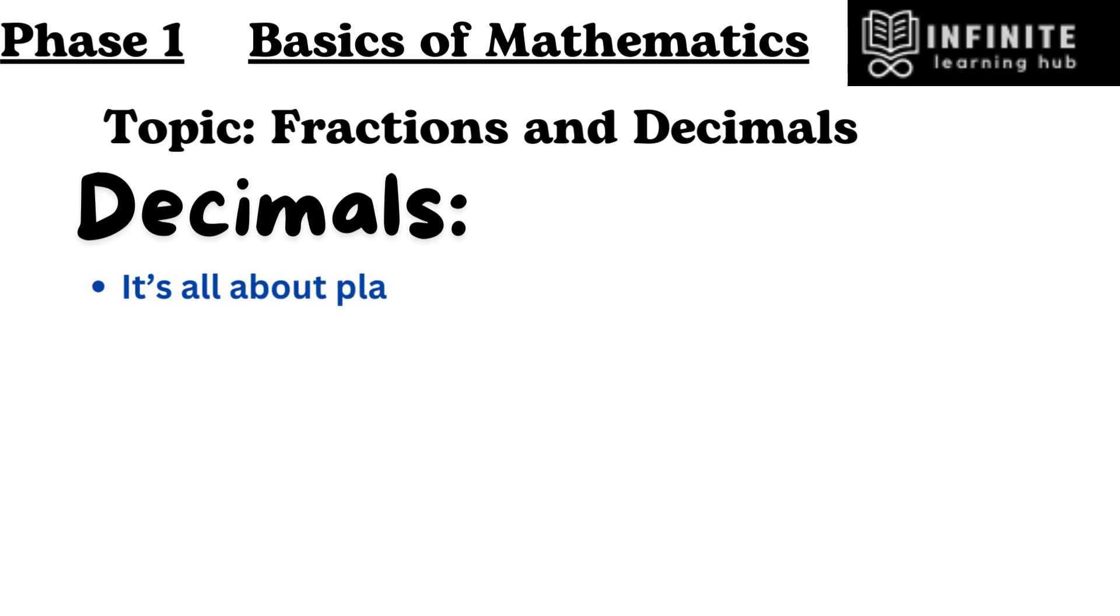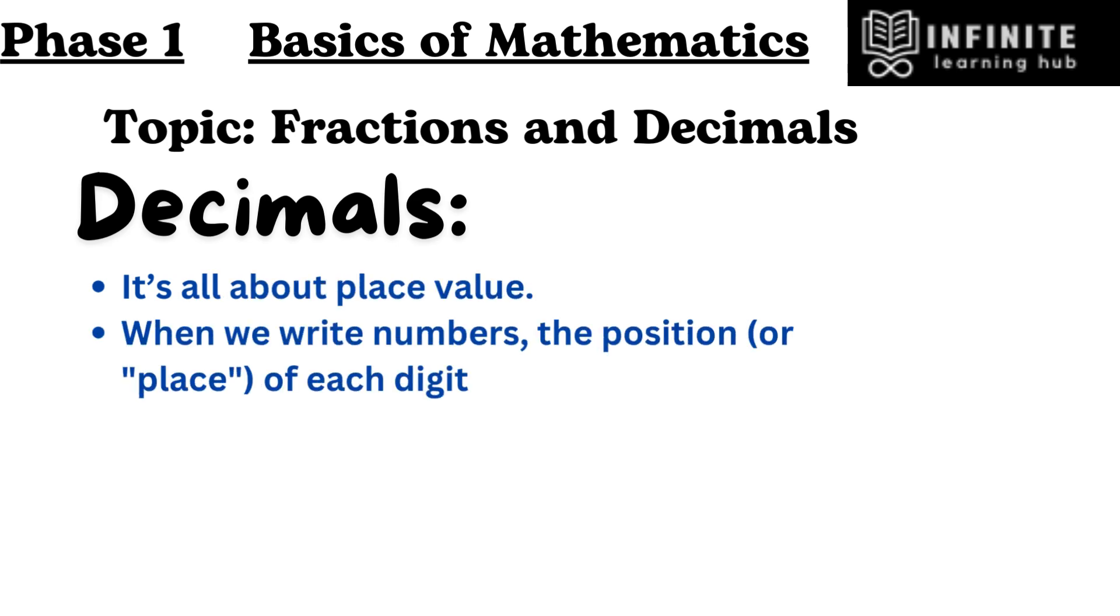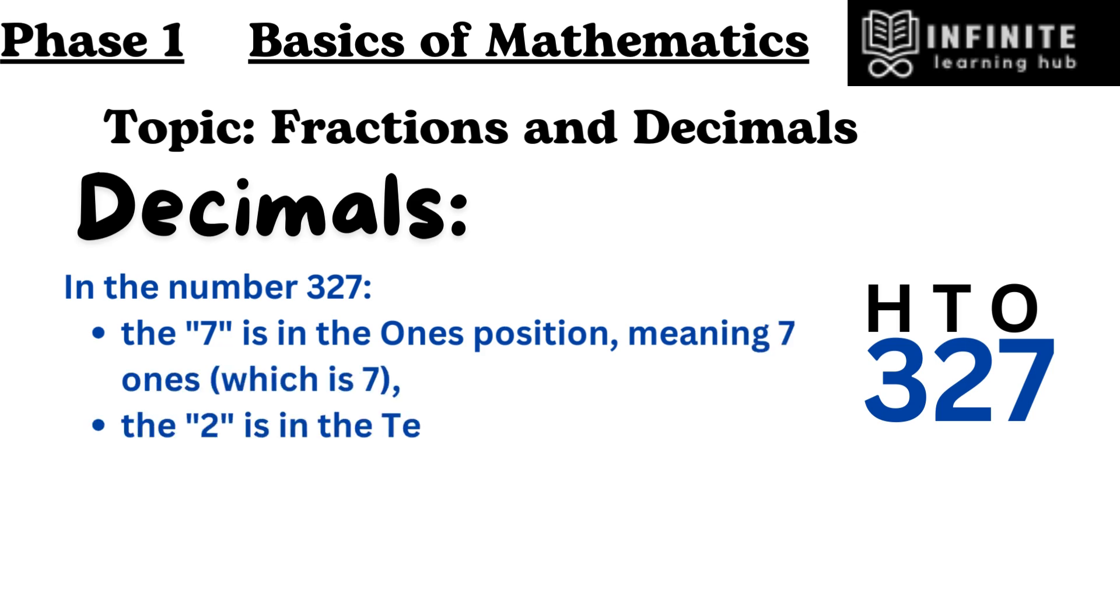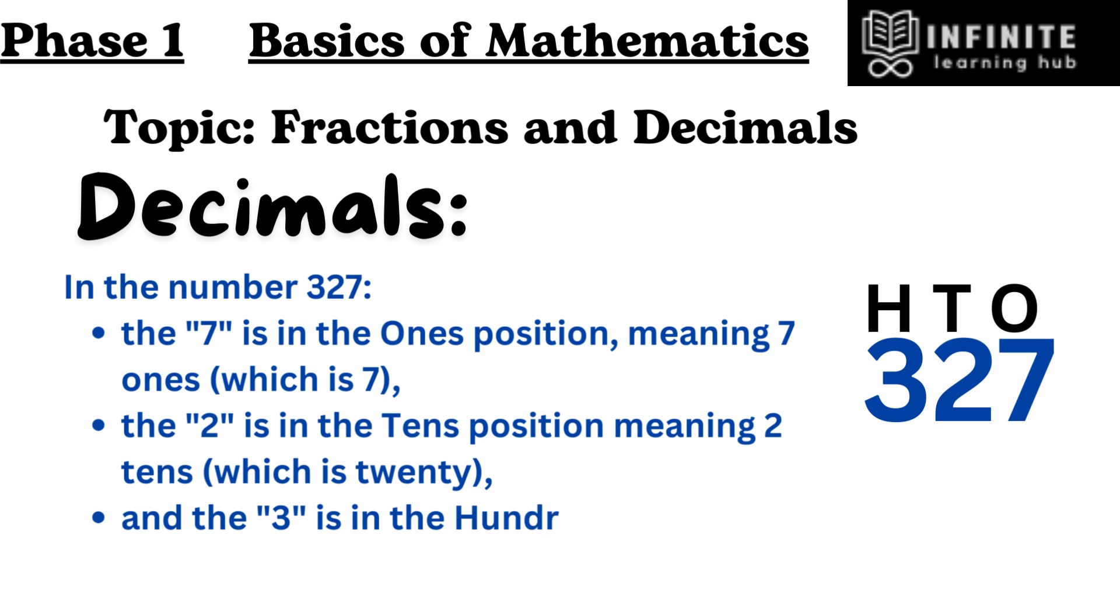It's all about place value. When we write numbers, the position or place of each digit is important. In the number 327, the 7 is in the 1's position, meaning 7 ones which is 7, the 2 is in the 10's position, meaning 2 tens which is 20, and the 3 is in the 100's position, meaning 3 hundreds.